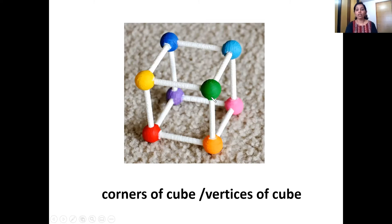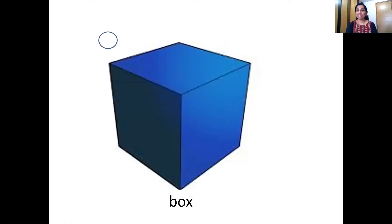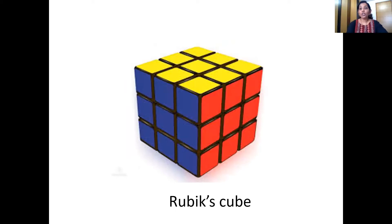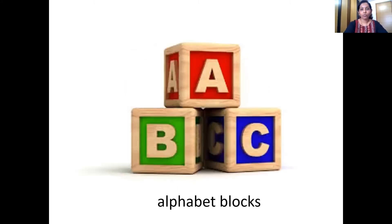And the objects that are shaped like a cube are called cubic shaped objects. Now let's see some objects that are cube shaped. What's this? Yes, it's a box, and the shape of the box is cube shaped. What's this? Yes, the Rubik's cube — and that's a cube shape. What are these children? They are blocks. And what is the shape of the blocks? Cube shaped. Wonderful. Well done, children. You all remember all your shapes.